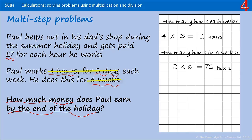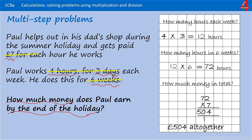Now that we've established he works 72 hours in the six weeks, we need to work out how much he's going to be paid for each of those 72 hours. Paul is paid seven pounds, so the calculation is 72 multiplied by seven, which is 504. How much money does Paul earn by the end of the holiday? He earns 504 pounds altogether.